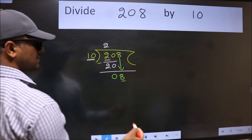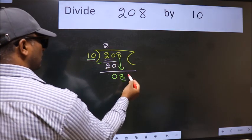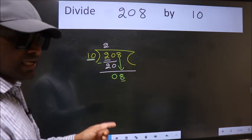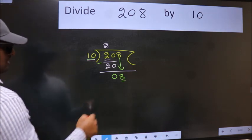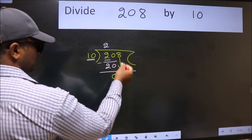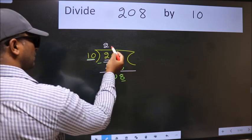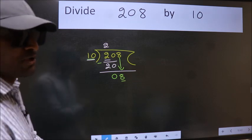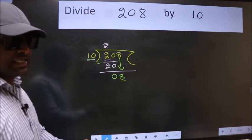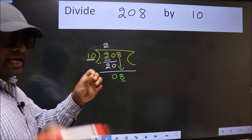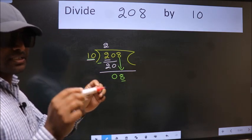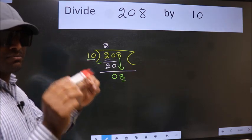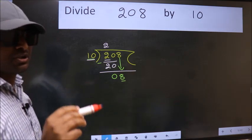So what many do is they directly put a dot and take 0, which is wrong. Why is it wrong? Because you just brought this number down, and in the same step you want to put a dot and take 0, which is wrong. I repeat: you should not bring down the number and put a dot and take 0 both in the same step.